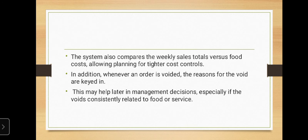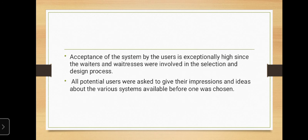The system also compares weekly sales totals versus food cost, allowing planning for tighter cost controls. In addition, whenever an order is voided, the reasons for the void are keyed in, which may help later in management decisions, especially if the voids are consistently related to food or service. Acceptance of the system by users is exceptionally high since waiters and waitresses were involved in the selection and design process; all potential users were asked to give their impressions before one system was chosen.